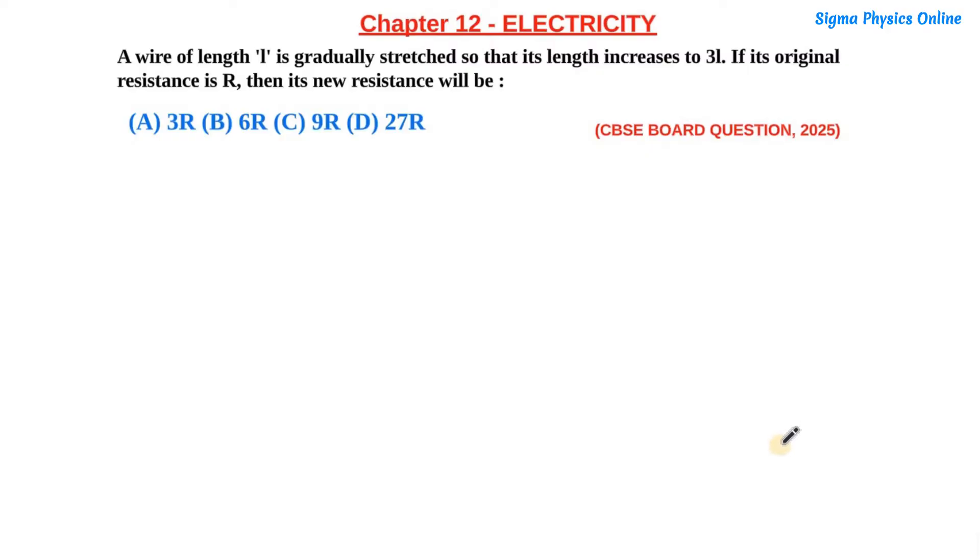Hello students, welcome back. Let's take up another board question from 2025. The question is: a wire of length l is gradually stretched so that its length increases to 3l. If its original resistance is R, then its new resistance will be 3R, 6R, 9R, or 27R. Let's understand this question.